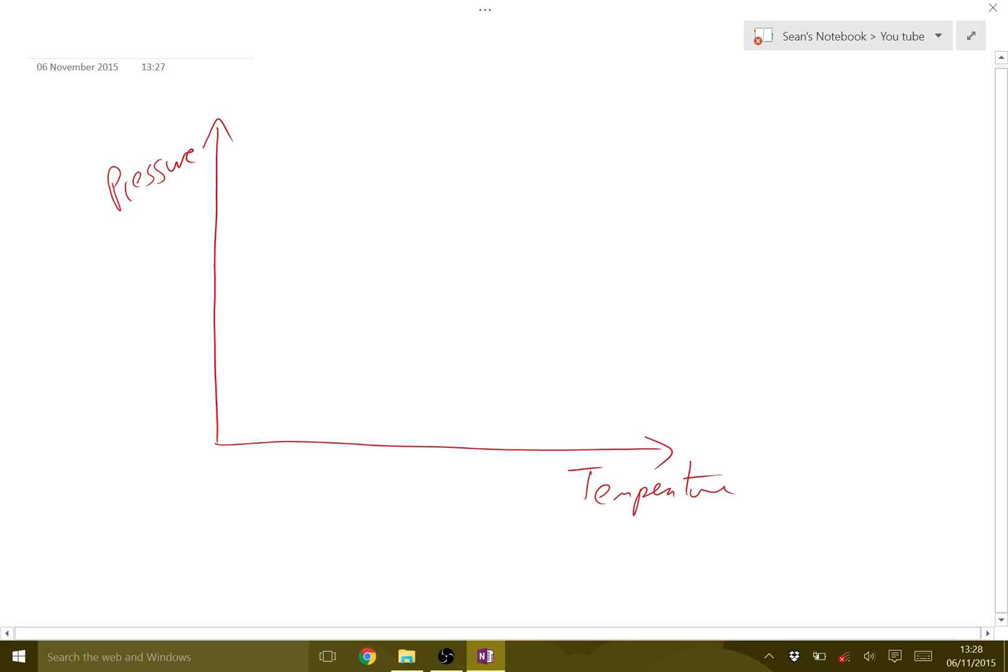We use it to see what phase a particular material is at different pressure or temperature. They tend to look something like this - we have these regions: a solid region here, liquid region here, and a gas region here.